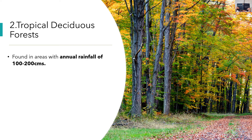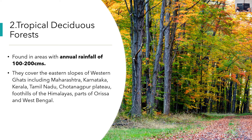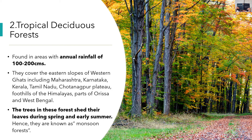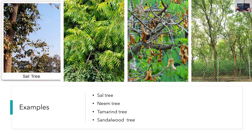Tropical Deciduous Forests: These forests are found in areas with annual rainfall of 100 to 200 centimeters. They cover the eastern slopes of the Western Ghats including Maharashtra, Karnataka, Kerala, Tamil Nadu, the Chota Nagpur Plateau, foothills of the Himalayas, and parts of Orissa and West Bengal. The trees shed their leaves during spring and early summer, so they are also known as monsoon forests. They are the most widespread forests in India. Some trees found here are sal, neem, tamarind, and sandalwood.